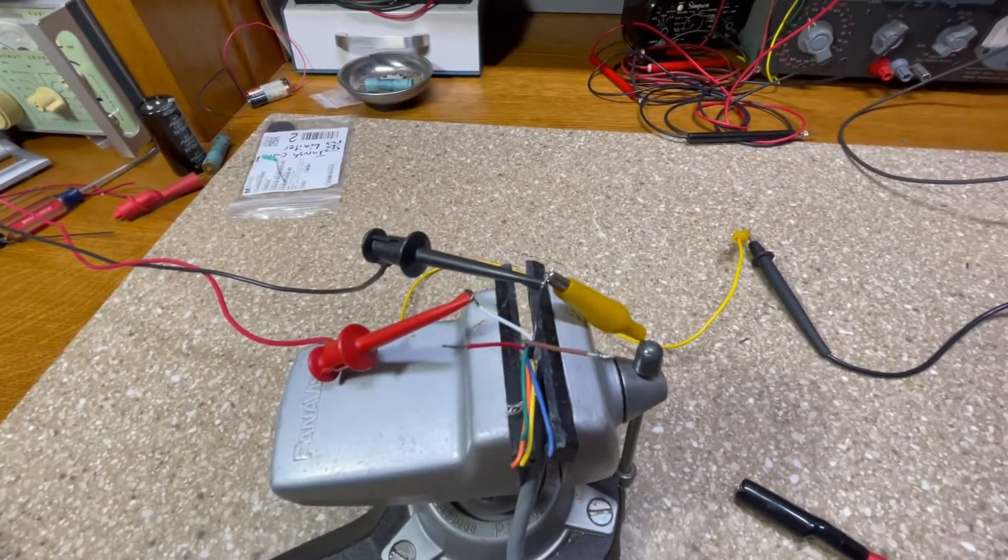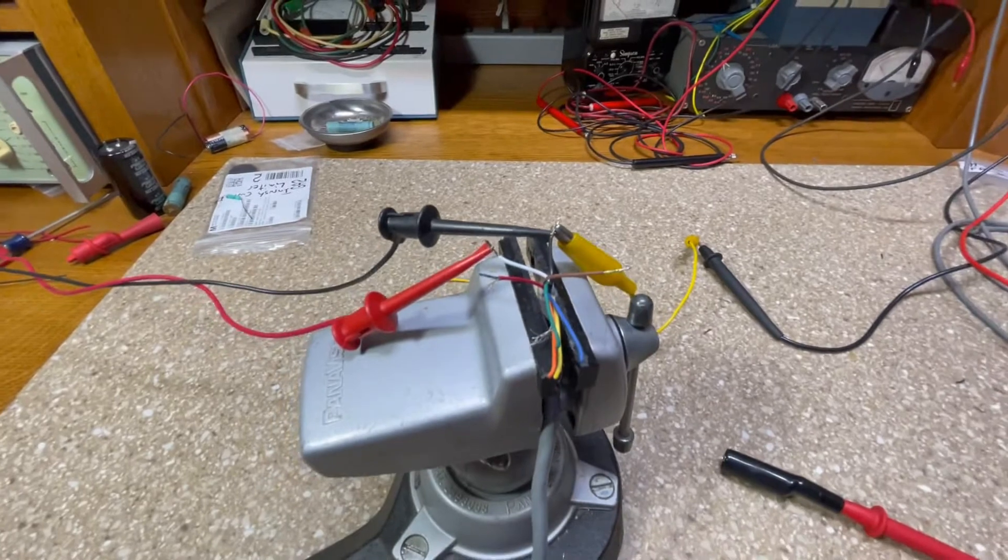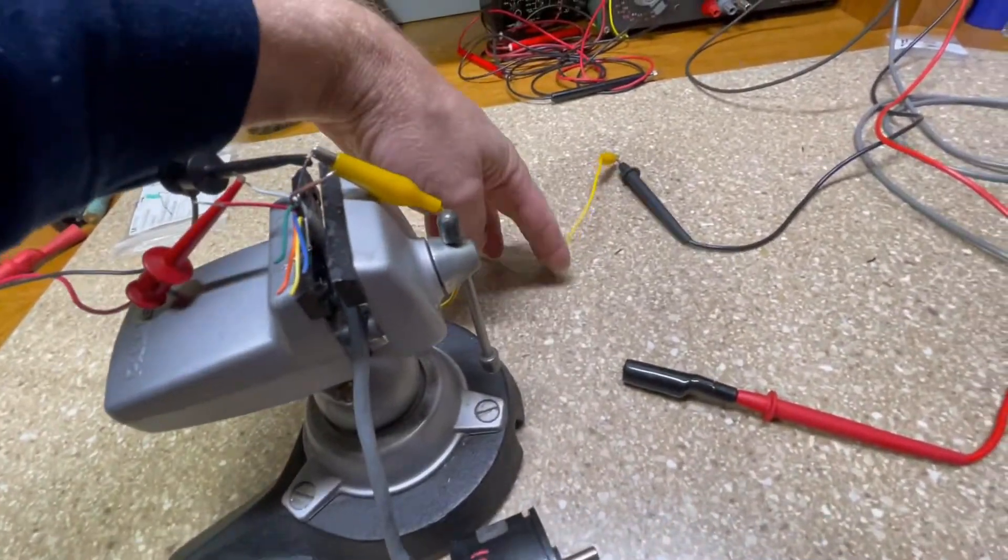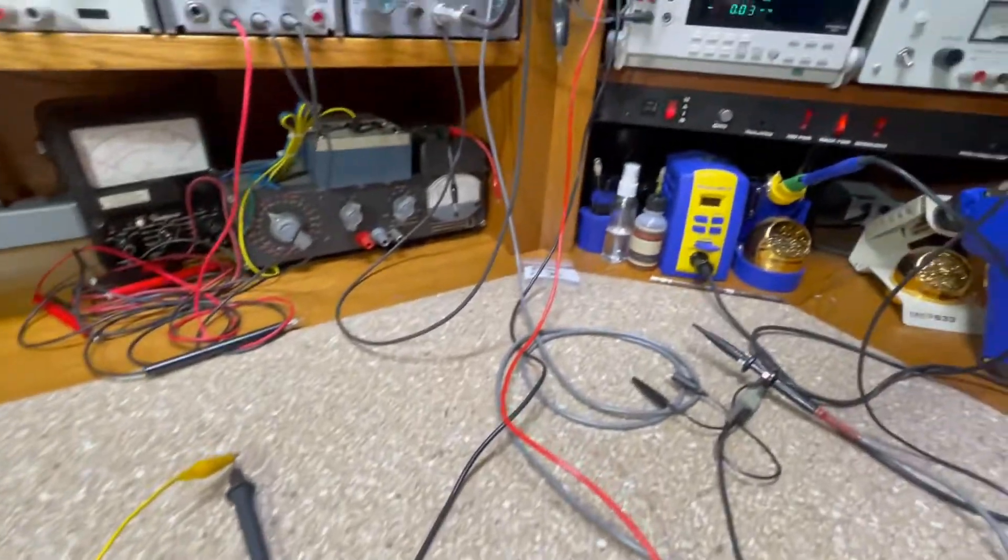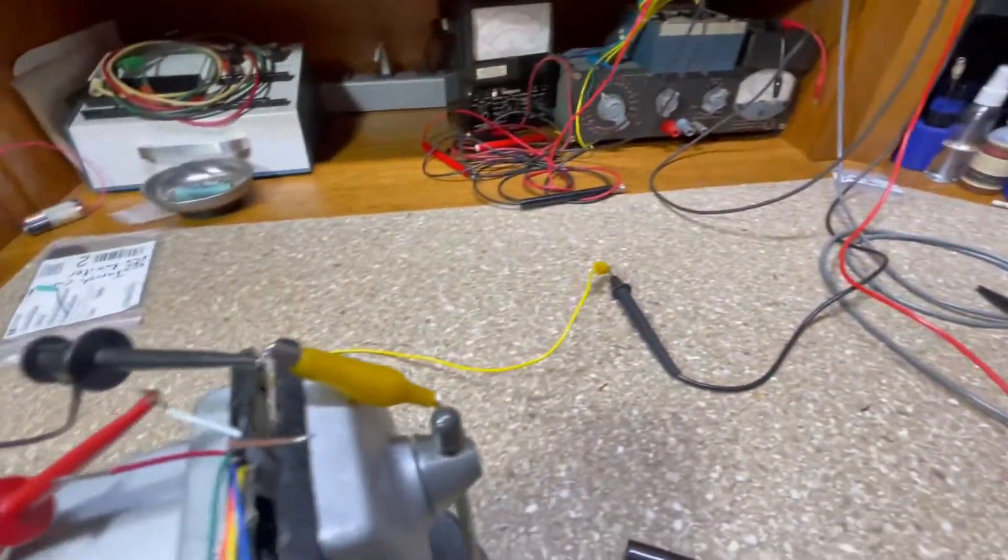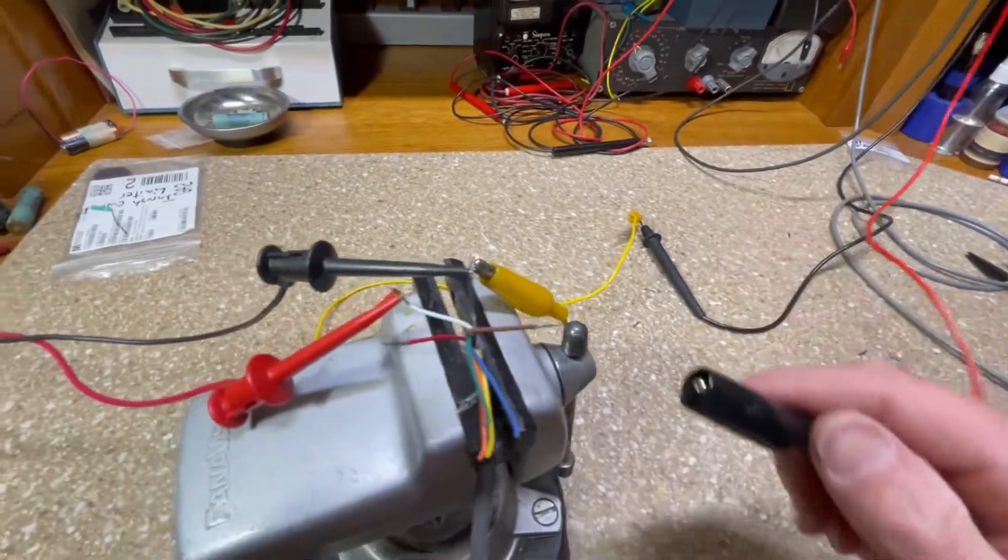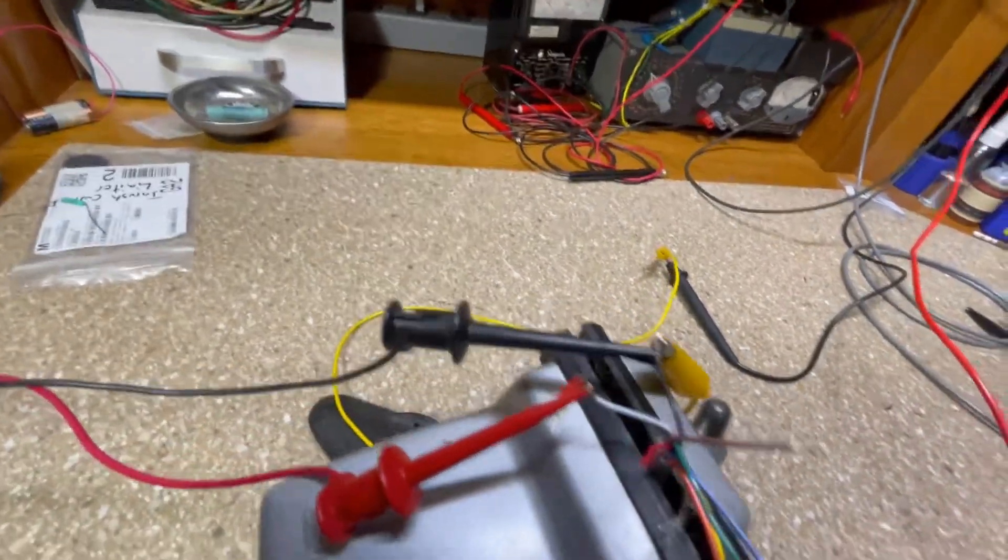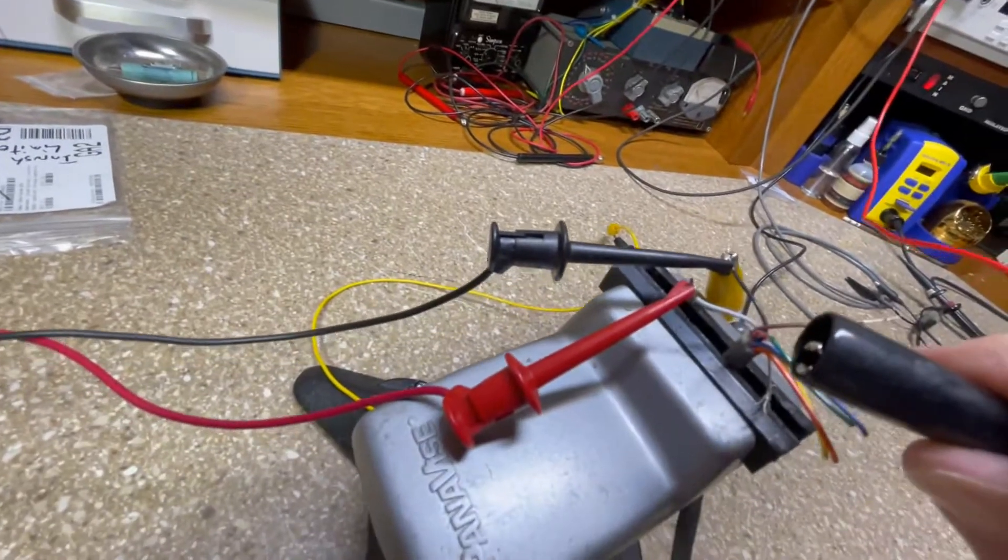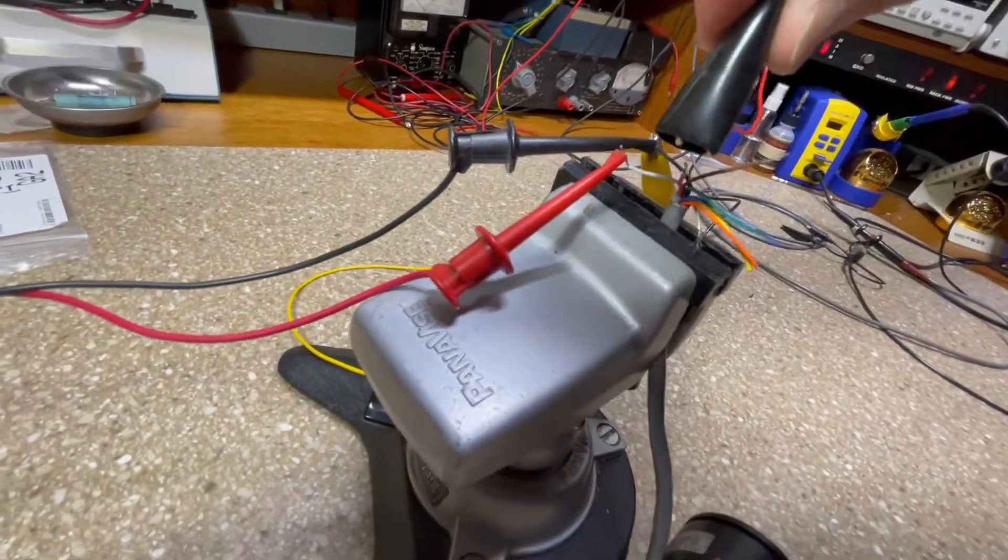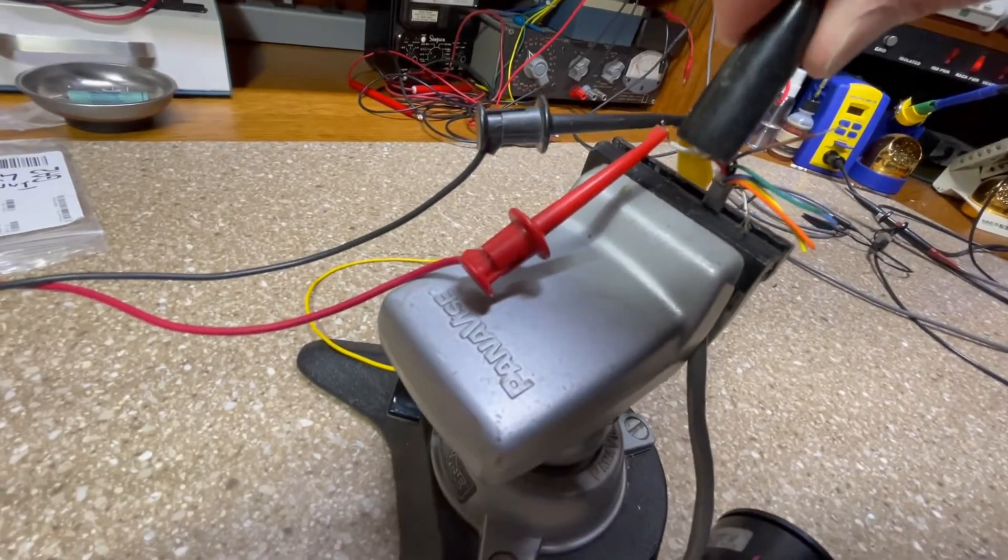I connected the ground lead of my digital multimeter right here to the common or the ground, and this is my positive lead here. So let me put it on the A channel. Kind of hard to do with the phone in your face, but there we go.